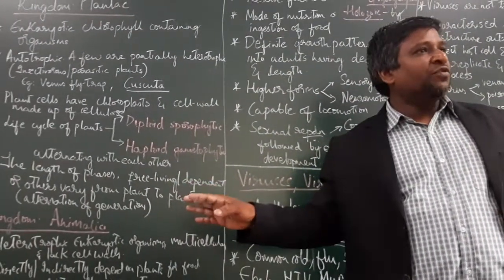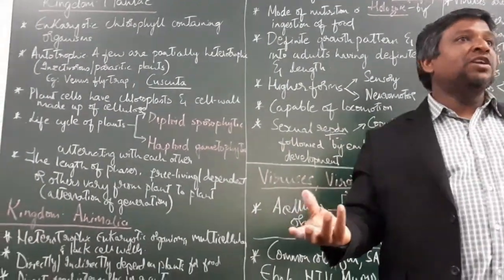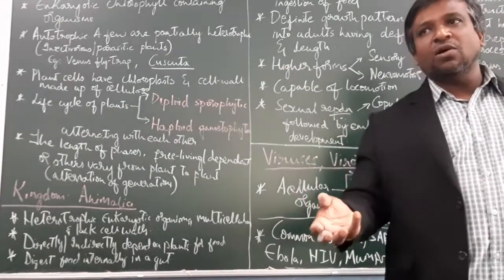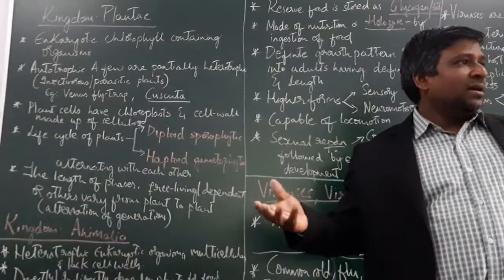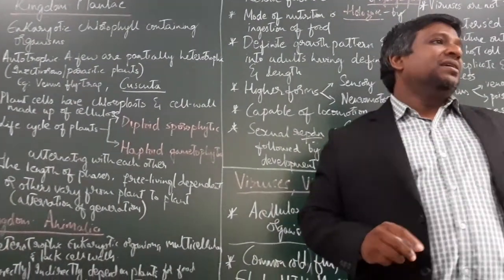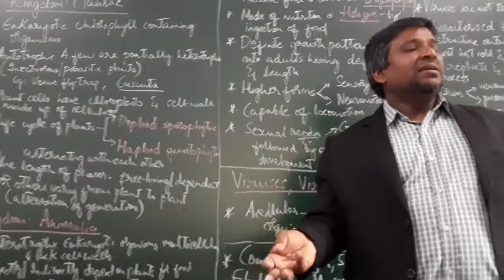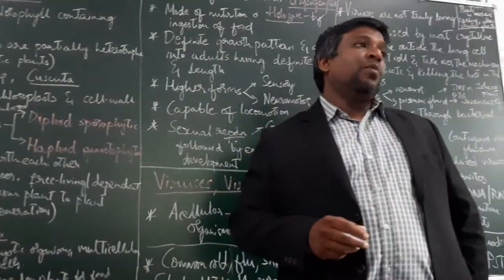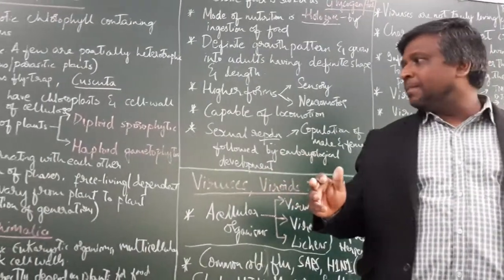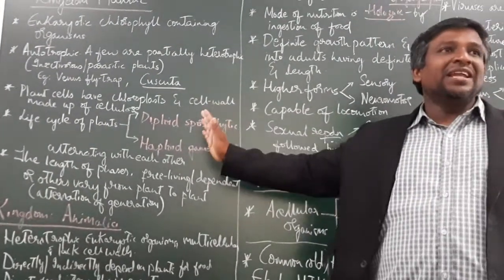The duration of the gametophytic and sporophytic phases varies from plant to plant. They can be free-living gametophyte or dependent gametophyte, free-living sporophyte or dependent. In bryophytes, the sporophyte is dependent upon the gametophytic generation, whereas in all other plants, the gametophytic generation is dependent on the sporophytic plants. Except for bryophytes, there is an alternation of generation in Kingdom Plantae.